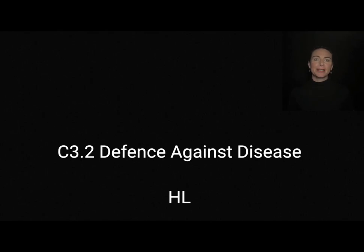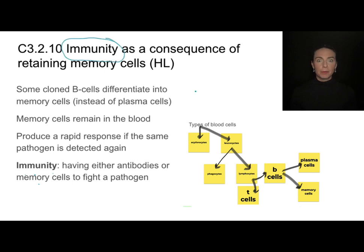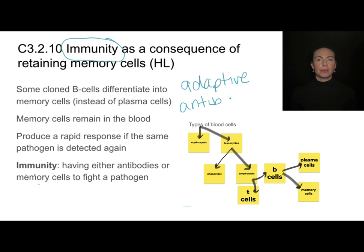This video will cover the higher level content from C3.2 on Defense Against Disease. The higher level section of this topic centers around the concept of immunity. When we think about immunity, we want to think of our adaptive immune system, which is all centered around the ability to produce antibodies.